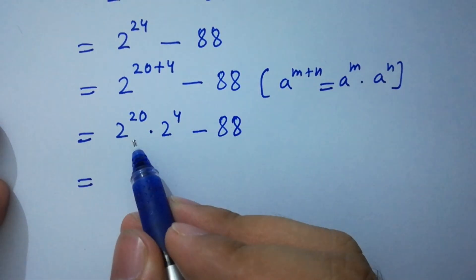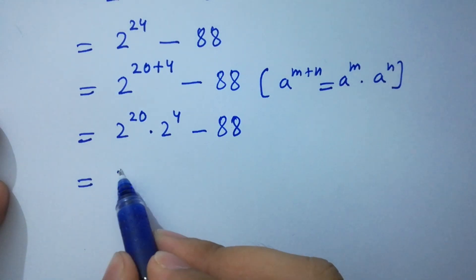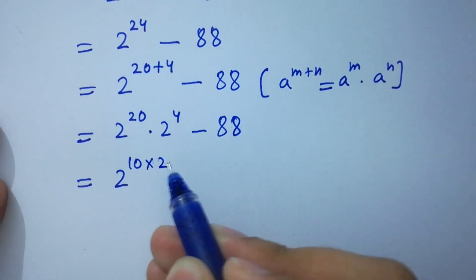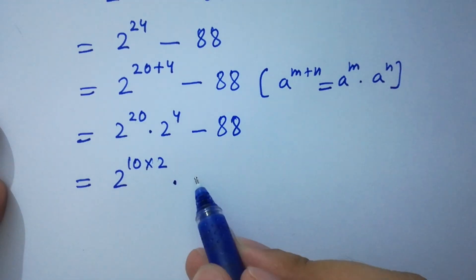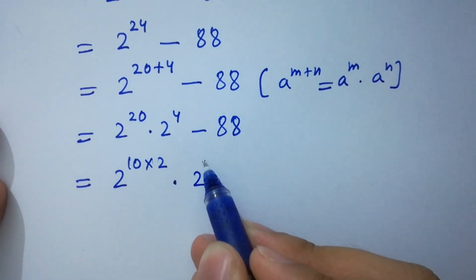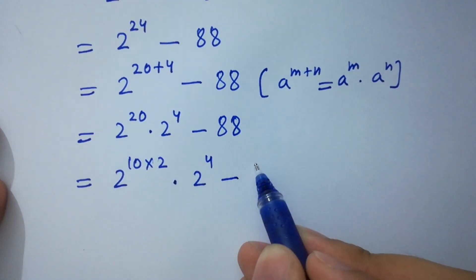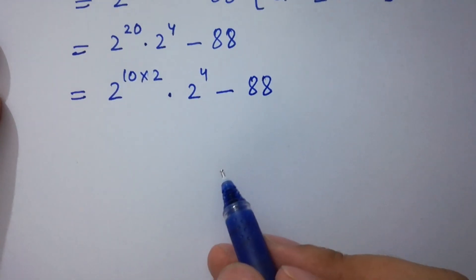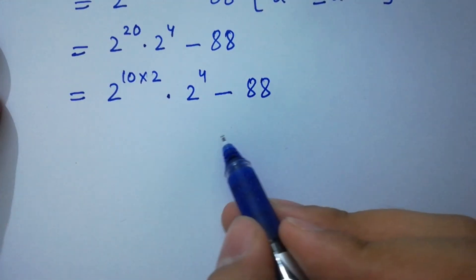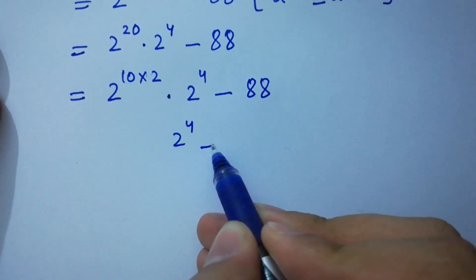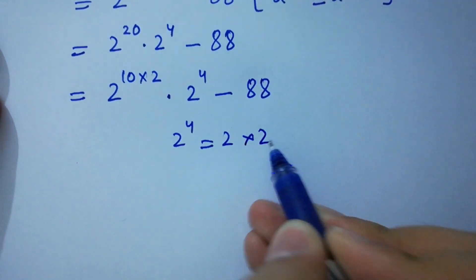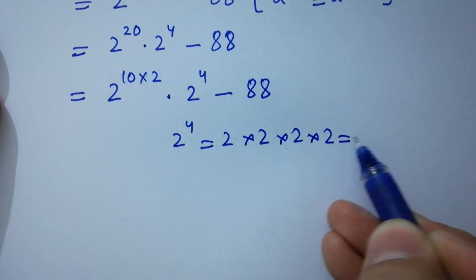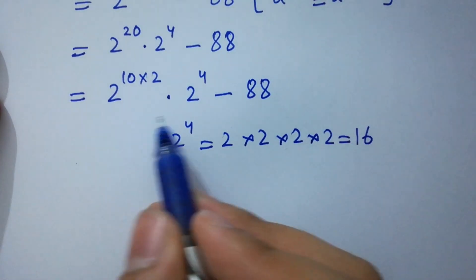Now, 2 to the power 20 is the same as (2 to the power 10)² times 2 to the power 4, minus 88. And 2 to the power 4 equals 2 times 2 is 4, times 2 is 8, times 2 is 16, so 2⁴ = 16.